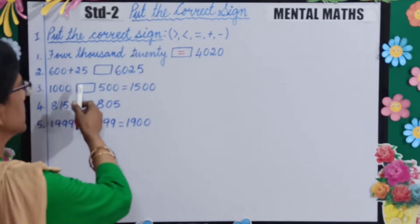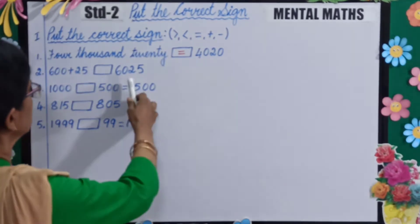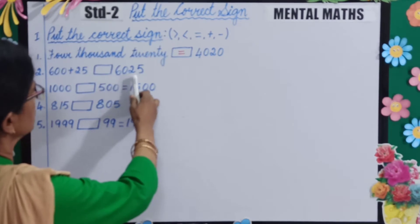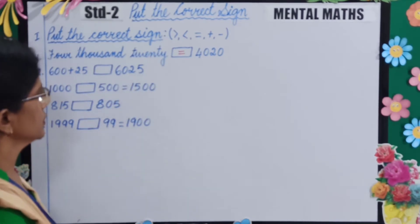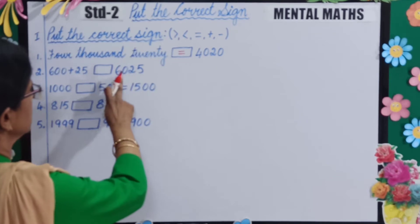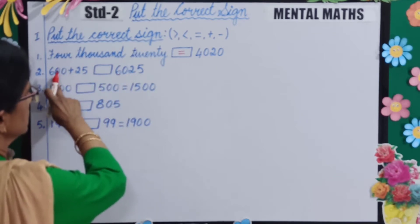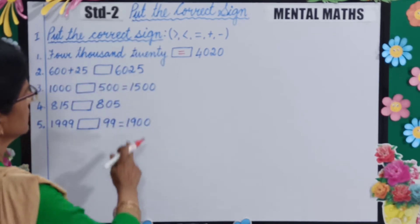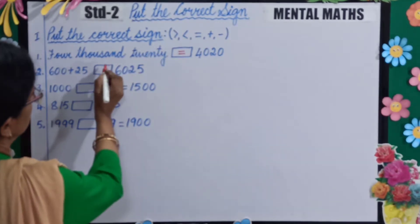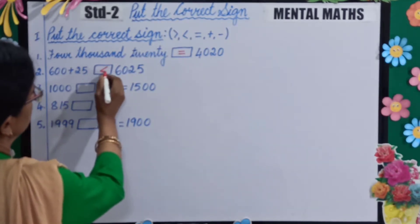600 plus 25, and here 6025. This is in the thousands place and this is in the 600s place. So which is greater? Of course, 6025 is greater. So you will put the greater than sign.